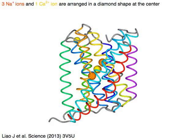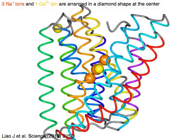Three sodium ions in orange and one calcium ion in orange are arranged in a diamond shape at the center.